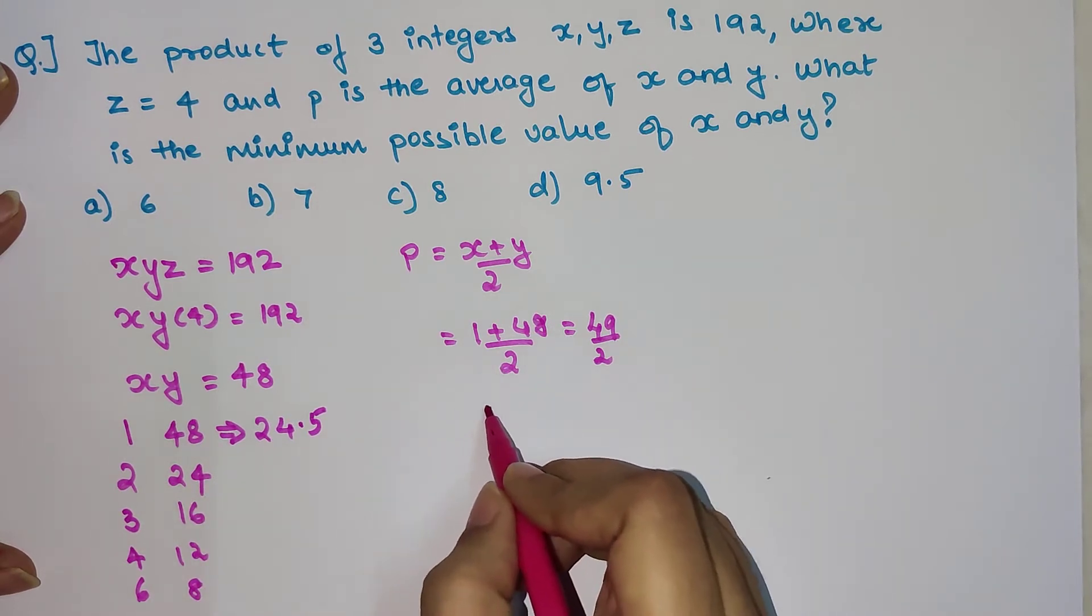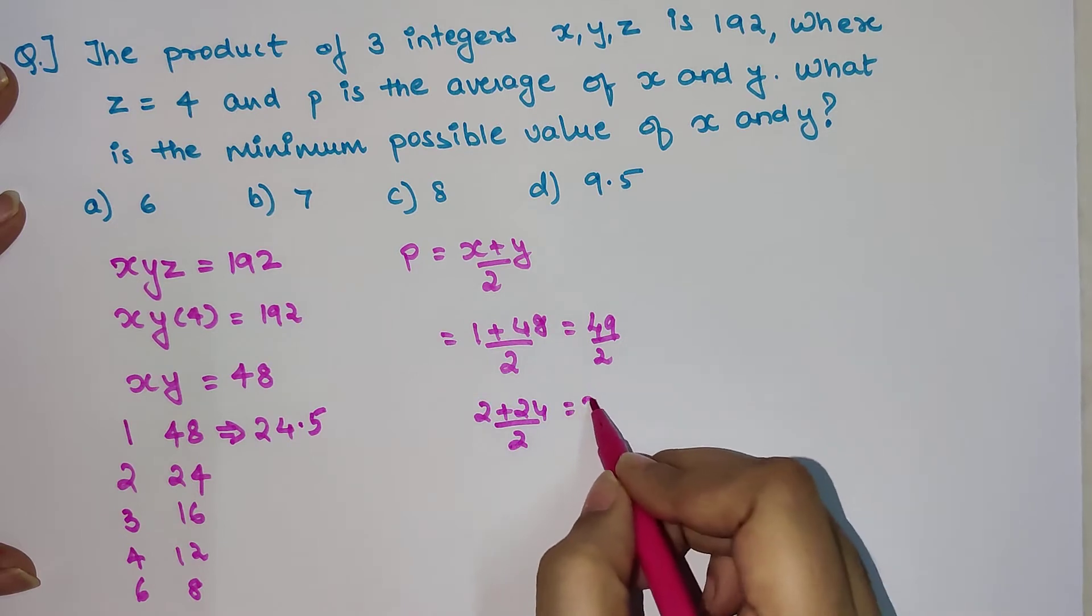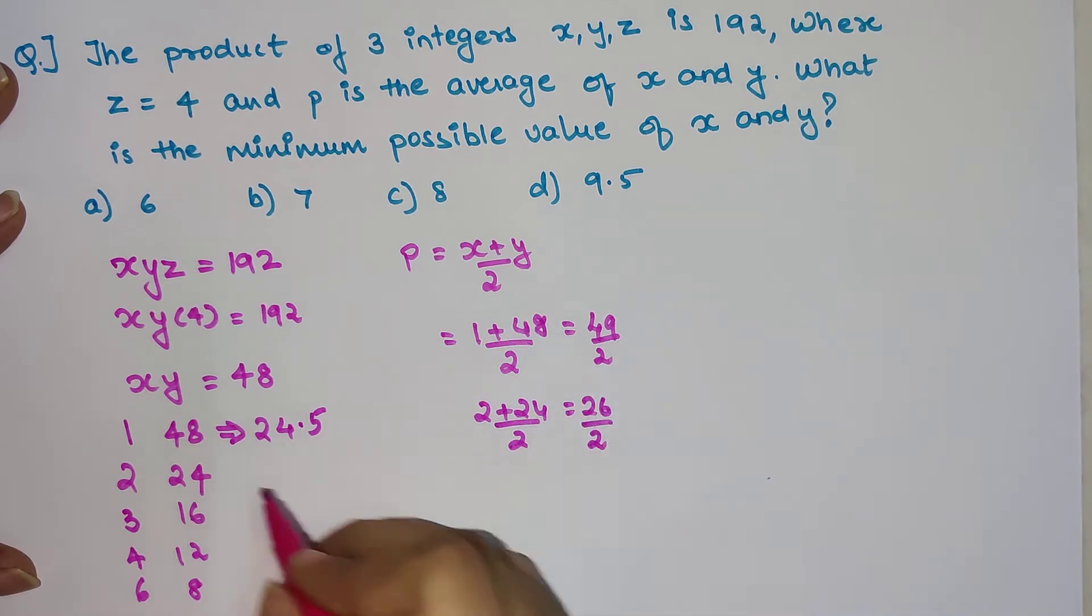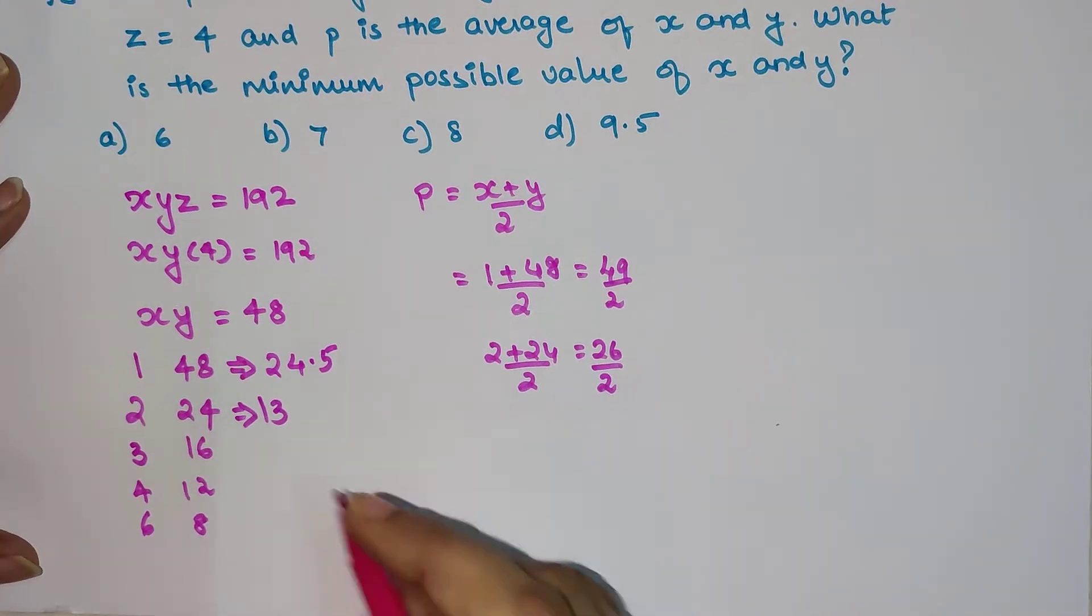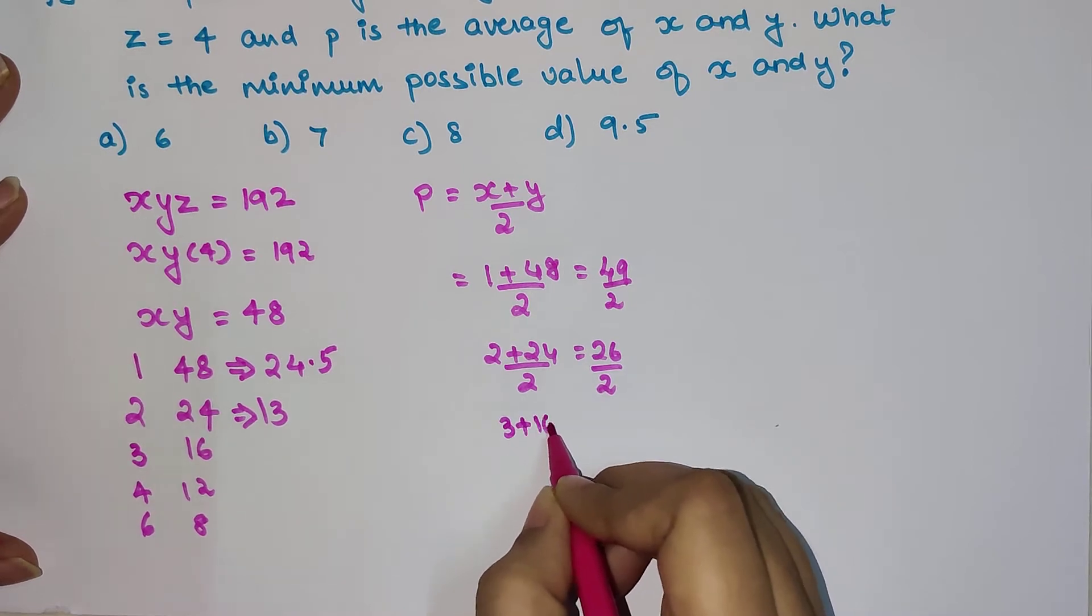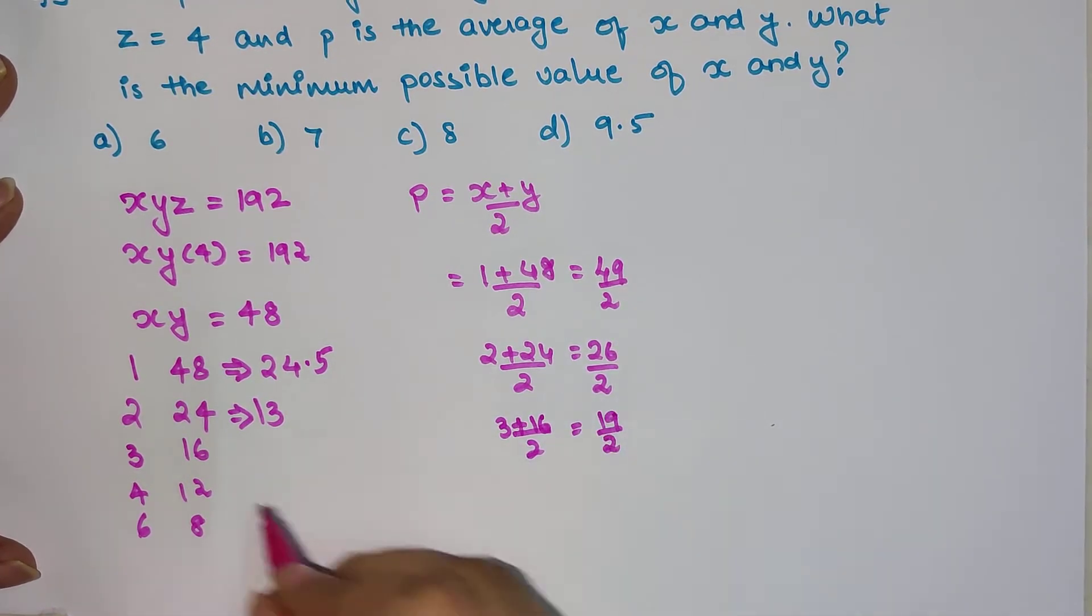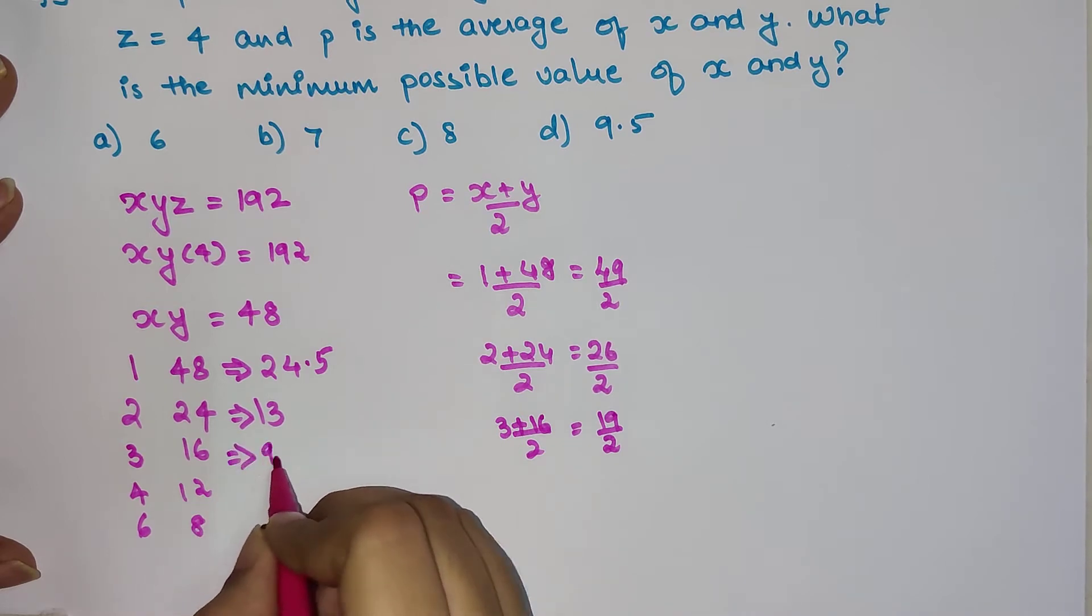Next, let's do 2 plus 24 upon 2, you get 26 upon 2, that gets you 13. Then 3 plus 16 upon 2 equals 19 upon 2, so that gets you 9.5.